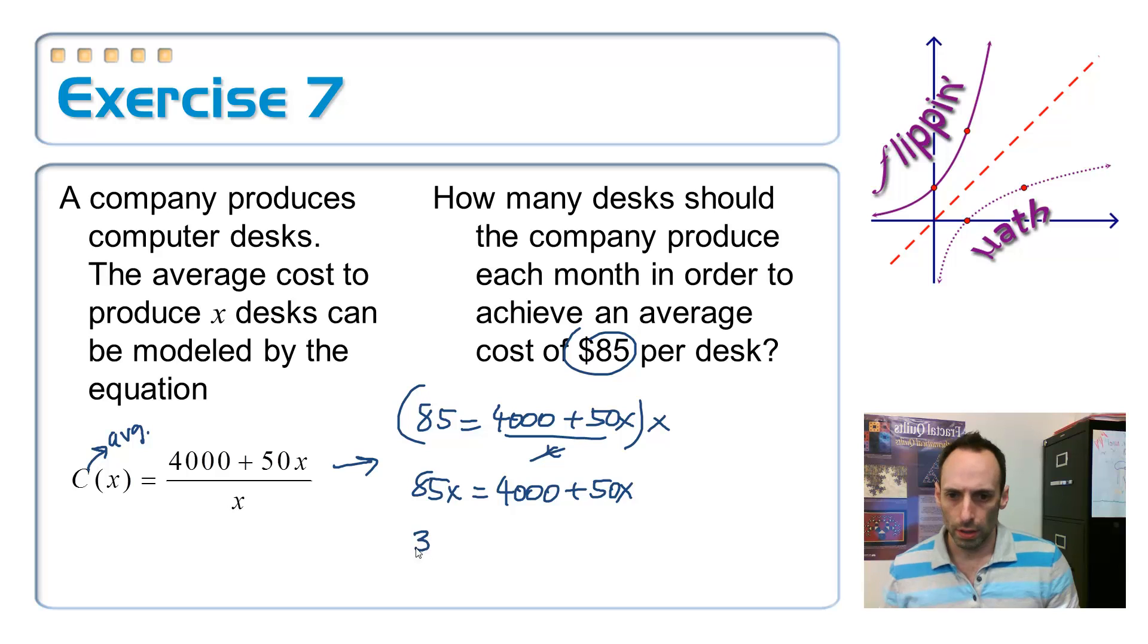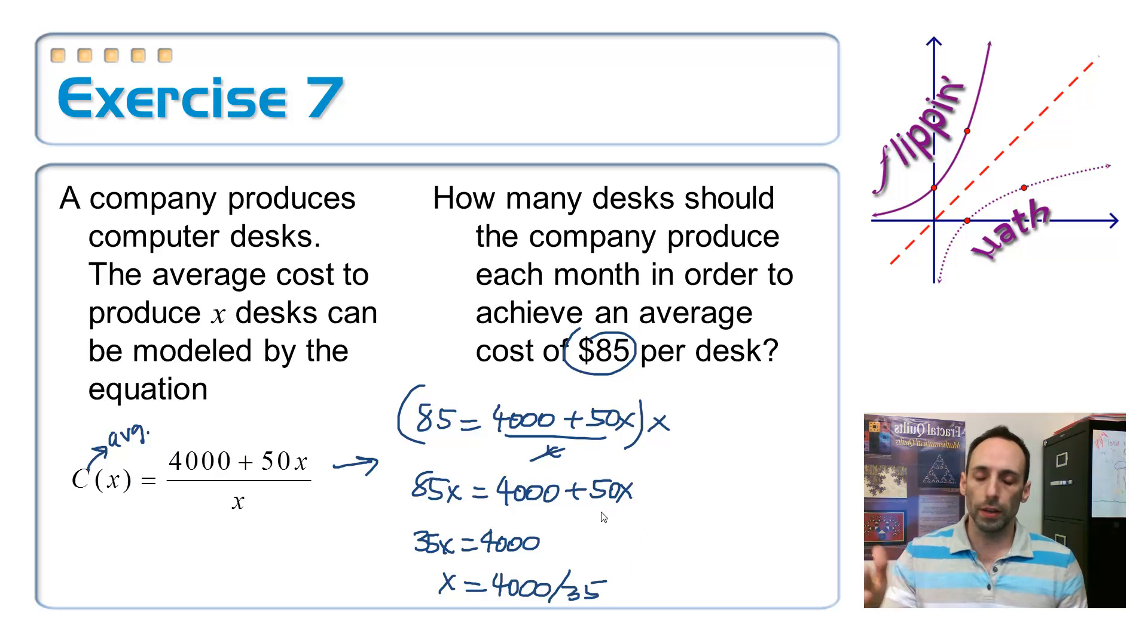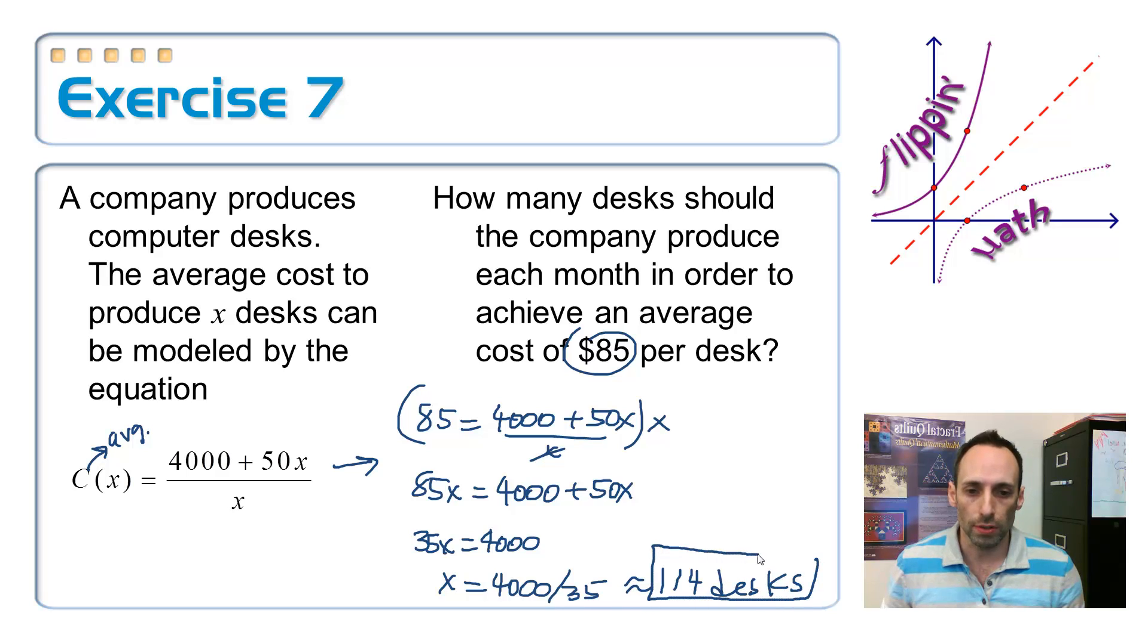and I get 35x equals $4,000 divided by $35. And I neglected to call up a calculator here, so I'll just cheat here and look at it. It's approximately 114 desks. Vital information. Now, you can sleep better at night knowing that.